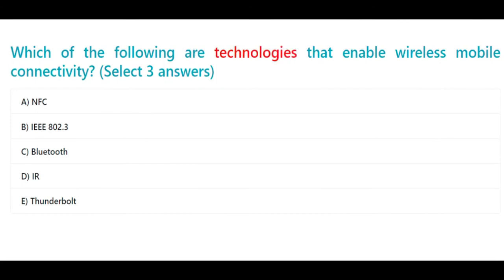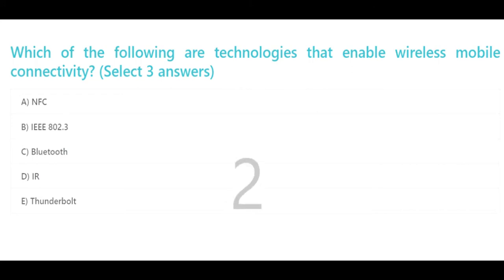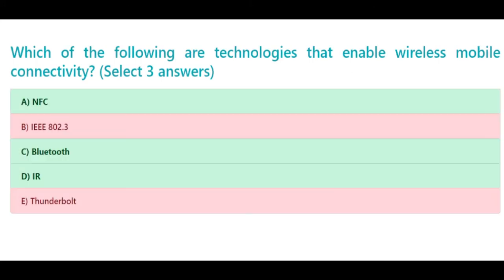Which of the following are technologies that enable wireless mobile connectivity? Select three answers: A. NFC, B. IEEE 802.3, C. Bluetooth, D. IR, E. Thunderbolt. The correct answers are A. NFC, C. Bluetooth, and D. IR.